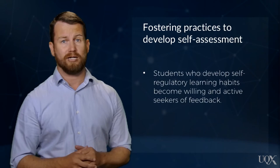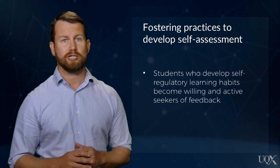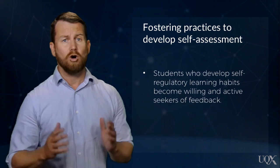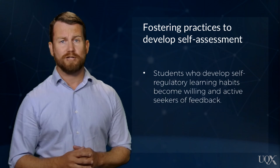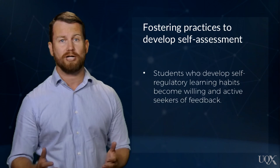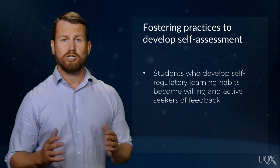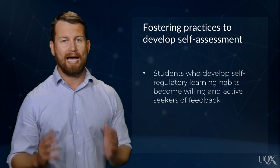Self-regulation is a key process within an effective model of feedback for deep learning. Self-regulated learners are cognisant of both the standards and criteria and their own current levels of performance or achievement. To develop self-regulatory behaviours, learners must be regularly engaged in tasks and activities that are matched to the criteria for success and include processes such as self-assessment that encourage critical thinking and reflection. Calibration mechanisms such as self-review, retrieval questions, peer feedback, and comparison with models and exemplars all allow students to compare their work against given standards and importantly identify areas for improvement. Self-assessment thus forms part of self-regulation where students can direct and monitor actions to achieve the learning intent. Students who develop self-regulatory learning habits become willing and active seekers of feedback.